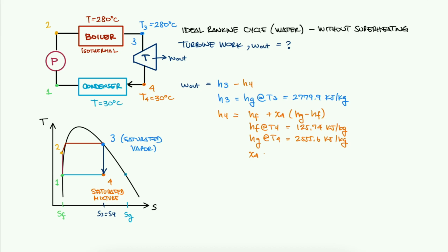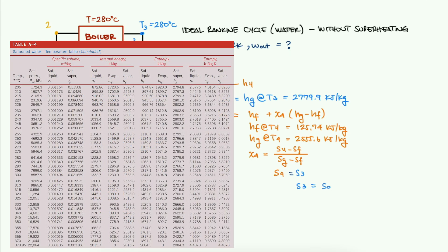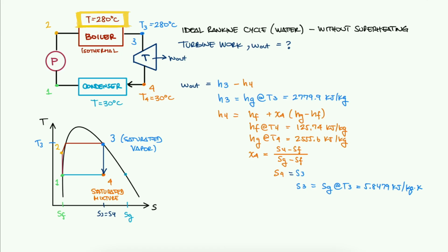To find the quality, we need another property at 4, and since the process between 3 and 4 is isentropic, we can state that S4 is equal to S3, and this is useful because we can find S3. The value for S3 is the Sg value at T3, or what is the same as the known temperature at the boiler.